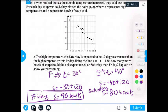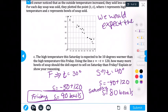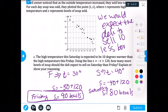So we can say we would expect the deli to sell 10 less bowls of soup. Remember to read the problem to help you answer it.